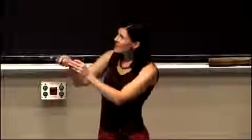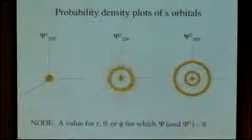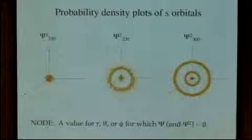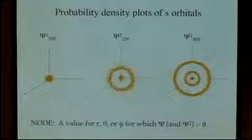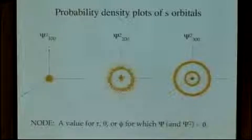We can see in our 1s orbital, how many nodes do we have? There are no nodes. It looks like we hit zero, but we actually don't. Remember that we never go all the way to zero, so if we were to look really carefully at an accurate probability density plot, it would never actually hit zero.